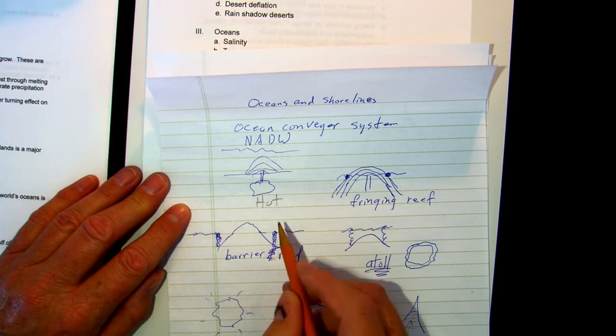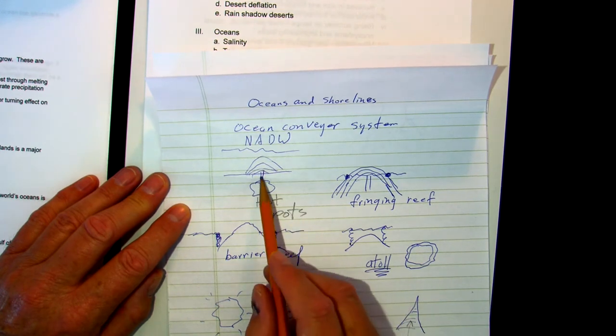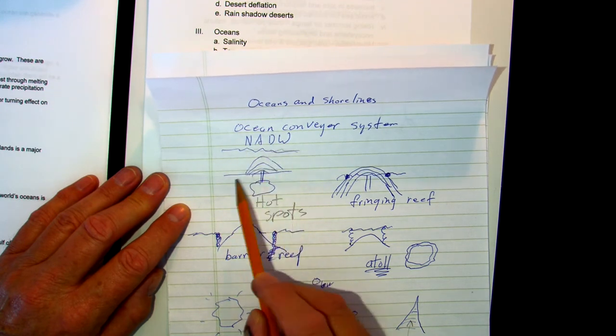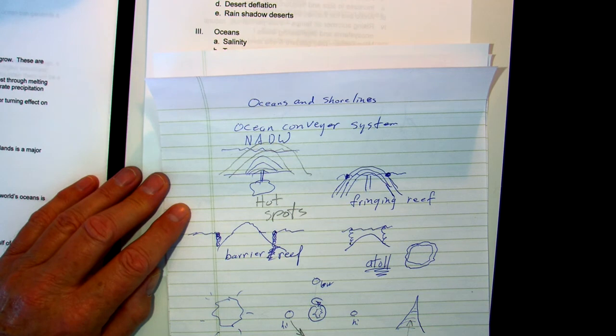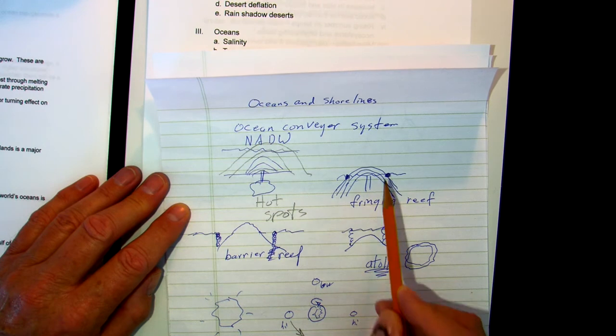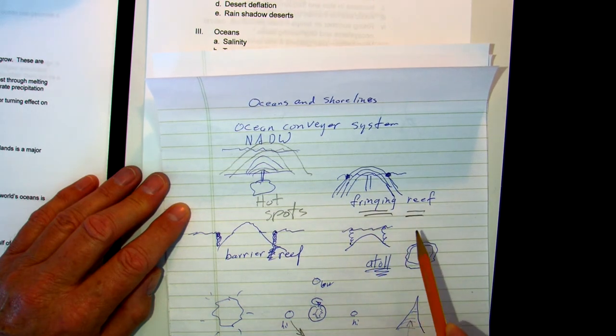These will start to build a volcano from the bottom of the sea. Here's our surface here. Eventually, this will break through the surface. Any coral that are floating around in the water will find, if it's warm enough, shallow enough, there's nutrients and it's not full of silt, will latch on to the side of one of these islands and start building a reef around it. This we refer to as a fringing reef.